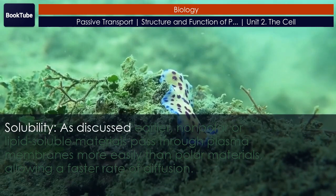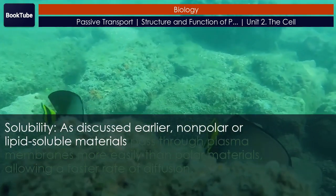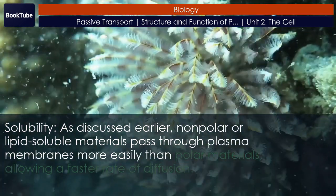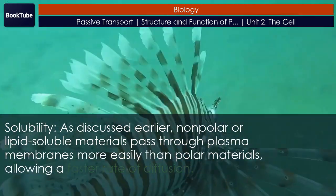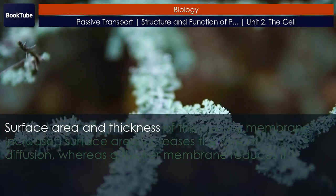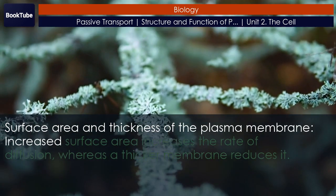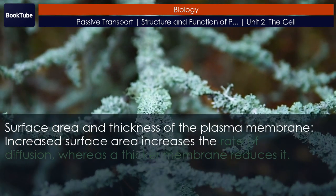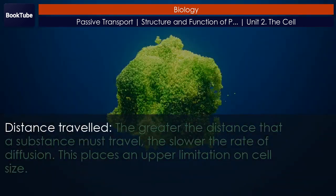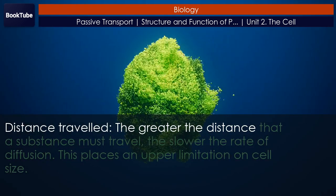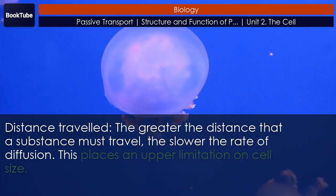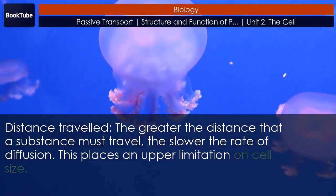Solubility: nonpolar or lipid-soluble materials pass through plasma membranes more easily than polar materials, allowing a faster rate of diffusion. Surface area and thickness of the plasma membrane: increased surface area increases the rate of diffusion, whereas a thicker membrane reduces it. Distance traveled: the greater the distance that a substance must travel, the slower the rate of diffusion. This places an upper limitation on cell size.